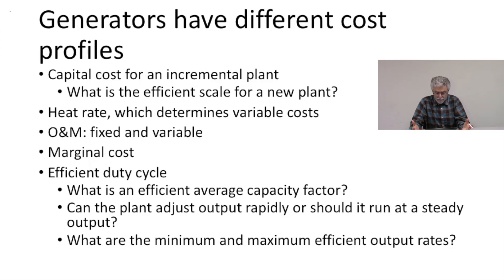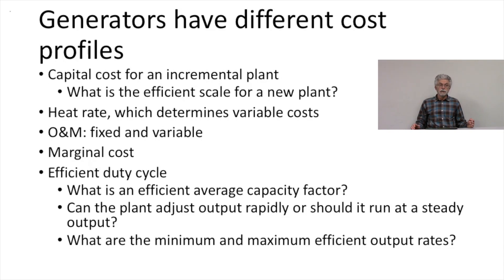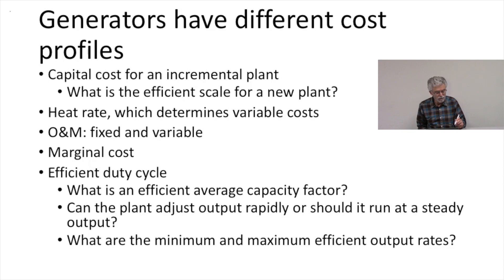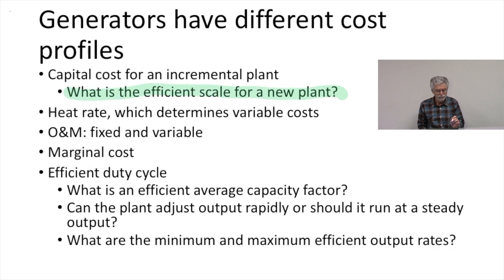Different kinds of generators have different cost profiles. Plants will have different capital costs, and the capital cost for an incremental plant will depend on its size. So we have to think about what's the minimum efficient size — or minimum efficient scale, as economists will often say — for a new plant. That will in part determine the capital cost for that plant.